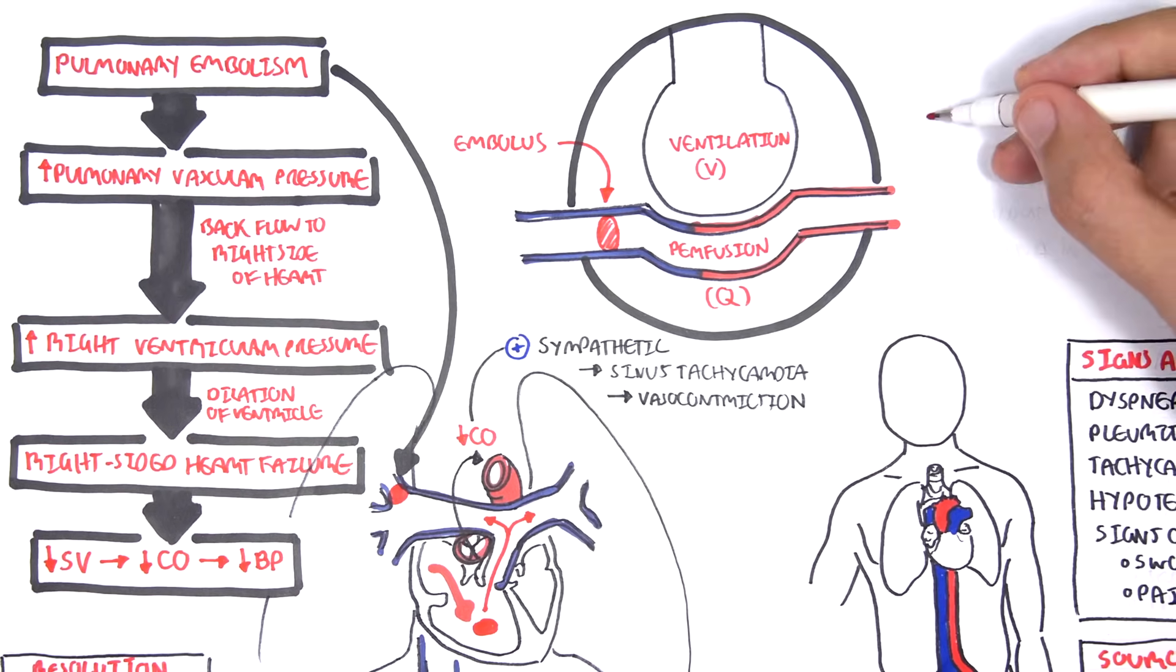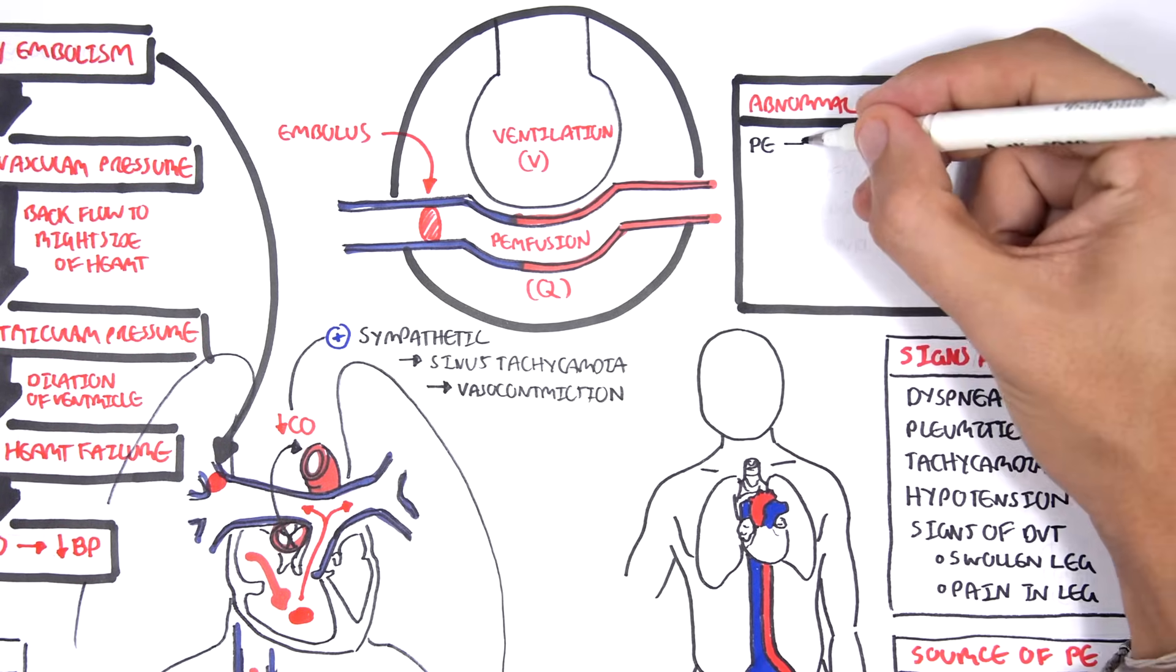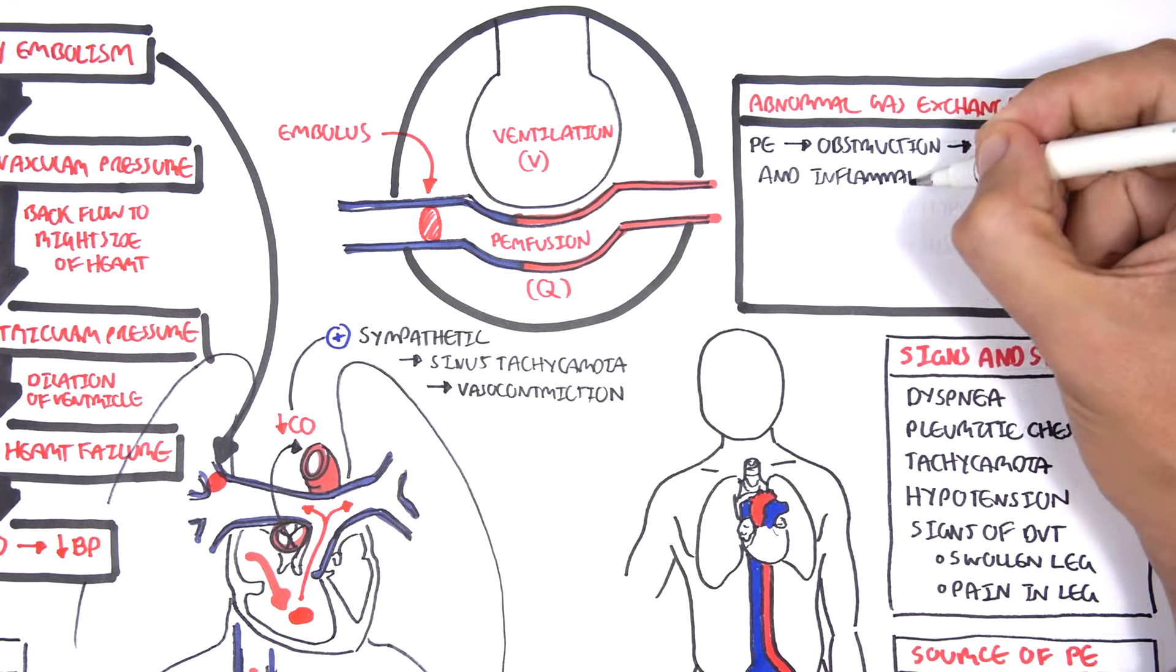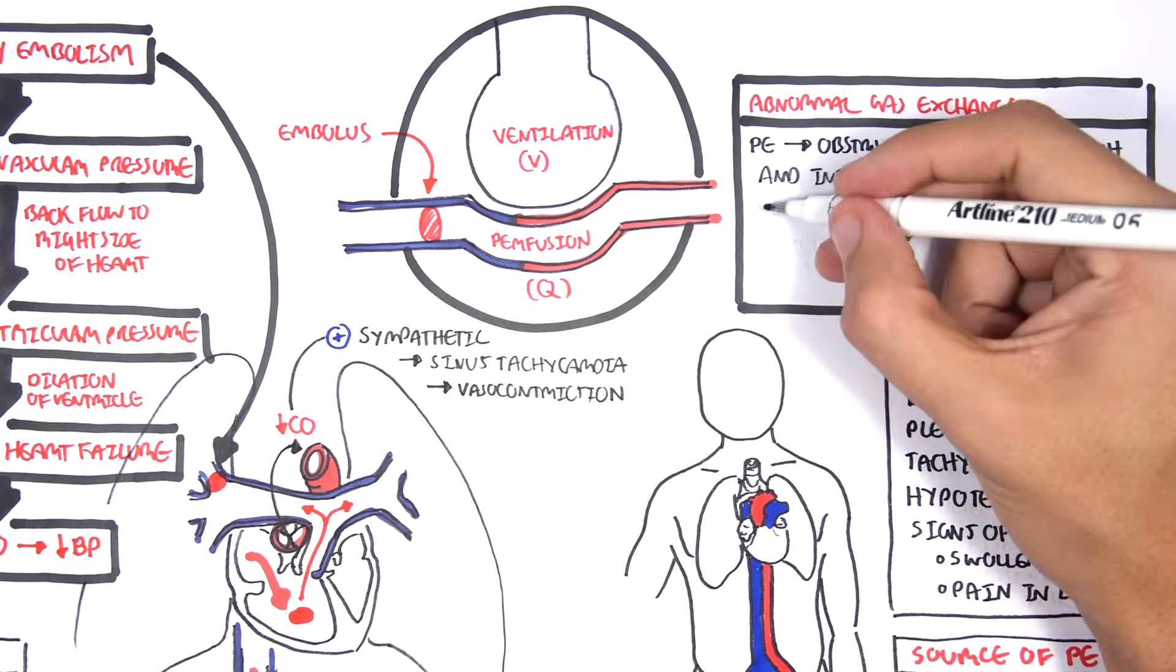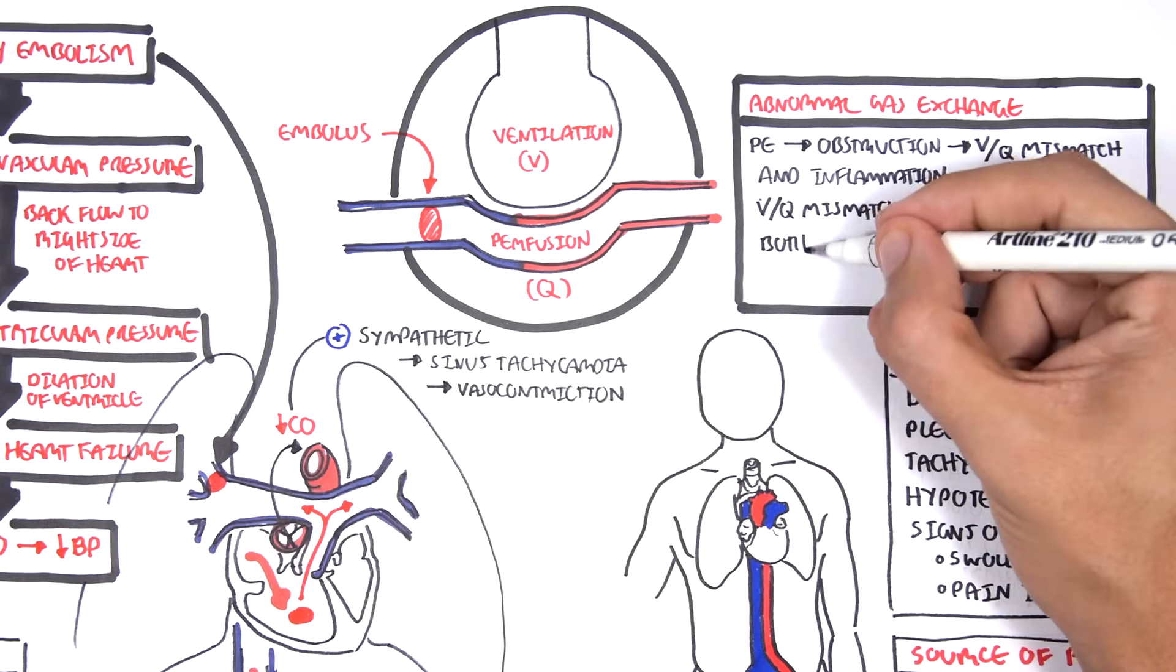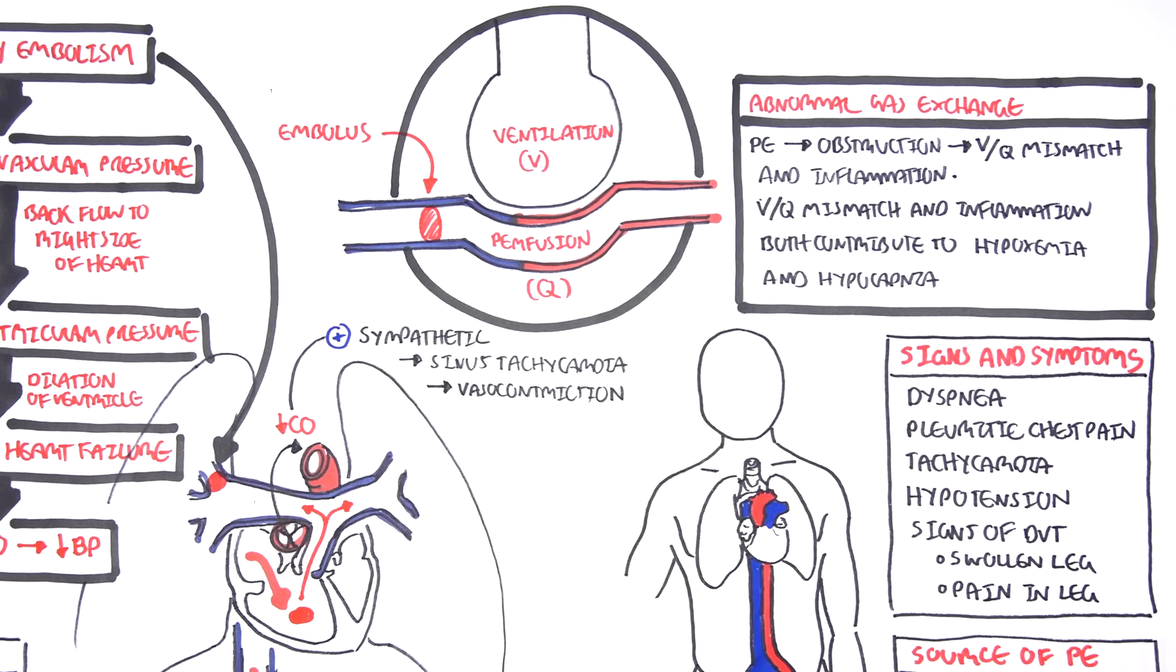A pulmonary emboli causes abnormal gas exchange. Pulmonary embolism leads to obstruction, which leads to V/Q mismatch and inflammation. Inflammation results in a lot of cytokines being released, which will lead to bronchoconstriction, which decreases the oxygen coming in. Because of this, the decrease in oxygen will stimulate hyperventilation, so you're breathing rapidly, which will lead to hypocapnia, a decrease in carbon dioxide.